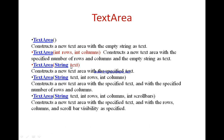The fourth constructor is TextArea(String text, int rows, int columns) — a combination of the second and third constructors. It displays the initial text specified by the first parameter, and the rows and columns parameters specify the height and width of the TextArea respectively.